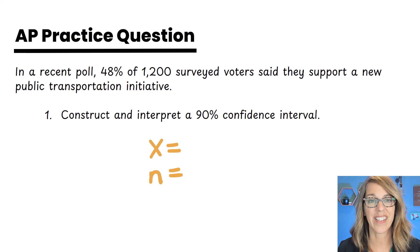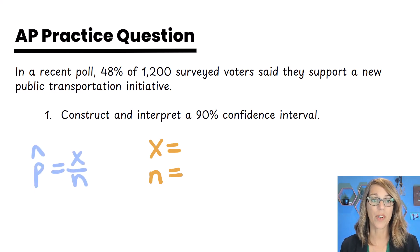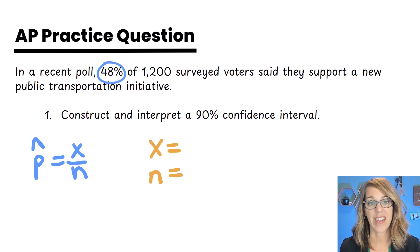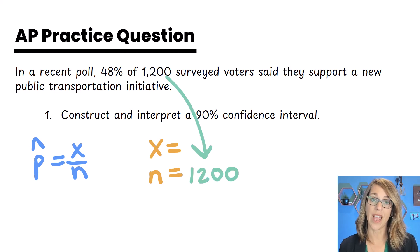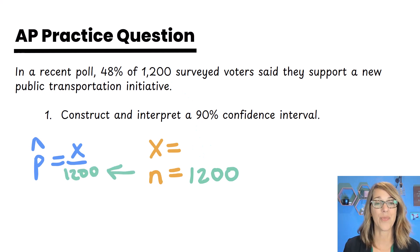But first we know that we're going to need x and n and we know that we can find that sample proportion which we're given in this case by doing x divided by n. Now we've got 1200 that's the total number in our survey. So 1200 is n over in my sample proportion that p hat. I can replace n with 1200.